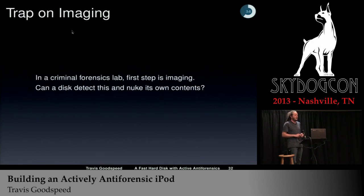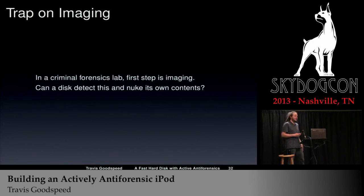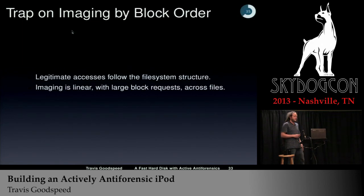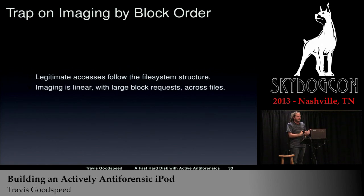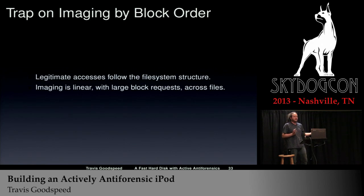You can also trap on imaging. In a criminal forensics lab, the first step is to image the hard disk, and the disk can detect this and erase its own contents. Legitimate accesses follow the file system structure, bouncing around from one block to another. Imaging is linear — it goes from the beginning to the end with large block requests, and keeps trying to grab larger sizes because it's happy to grab multiple files at once.